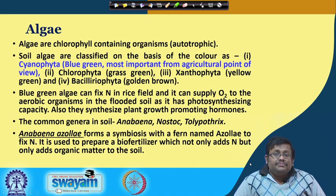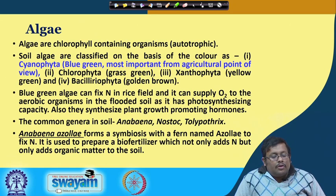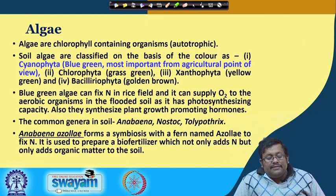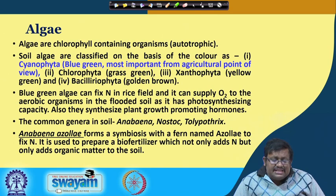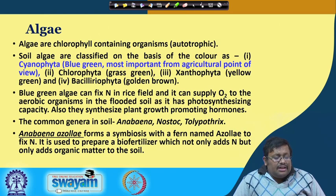Now let us talk about algae. Algae are chlorophyll-containing organisms which are basically autotrophic. Soil algae are classified based on their colour. There are four major classifications: Cyanophyta, also known as blue-green algae, which are the most important; Chlorophyta, which are grass-green algae; Xanthophyta, which are yellow-green algae; and Bacillariophyta, which are golden-brown algae.